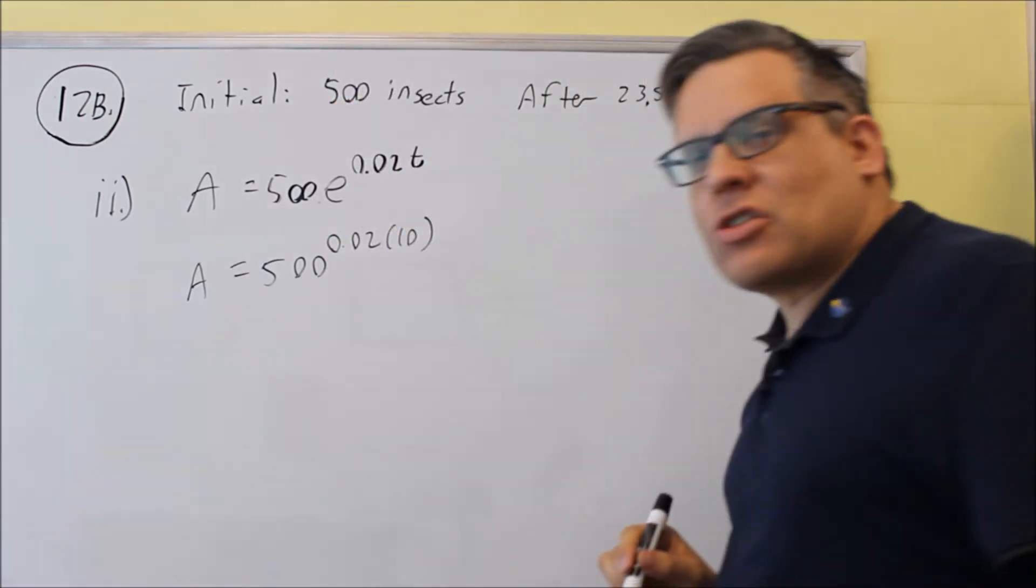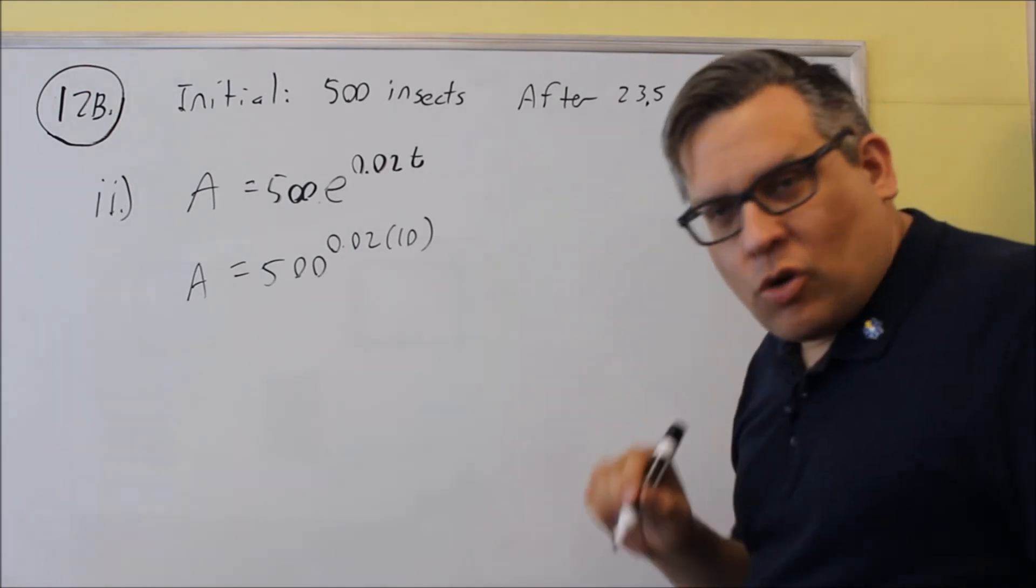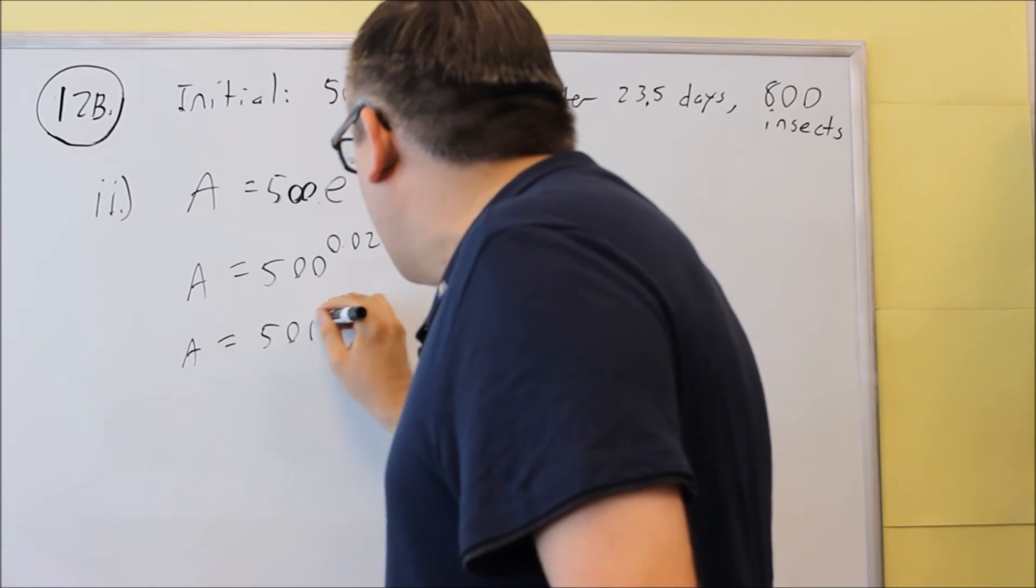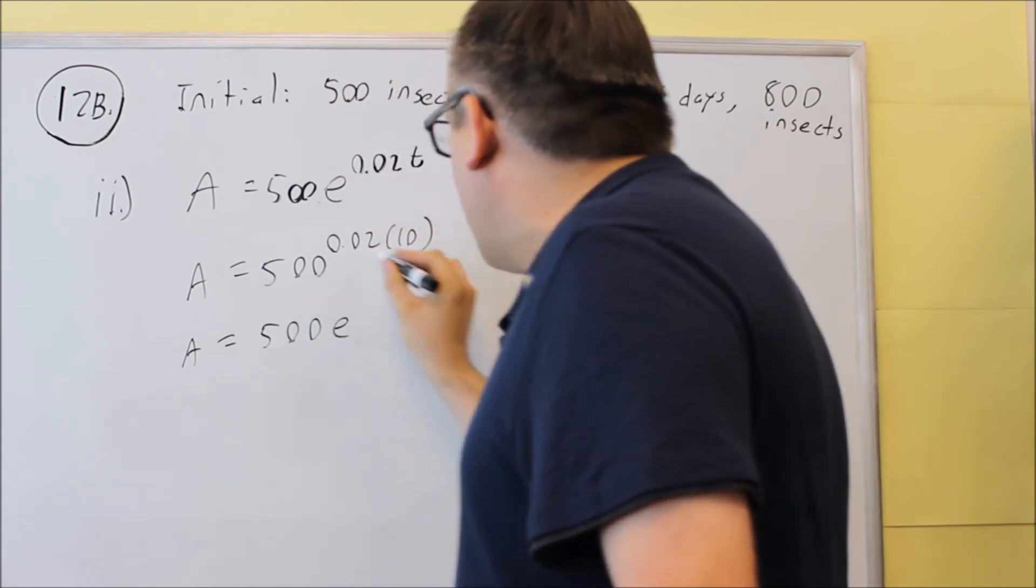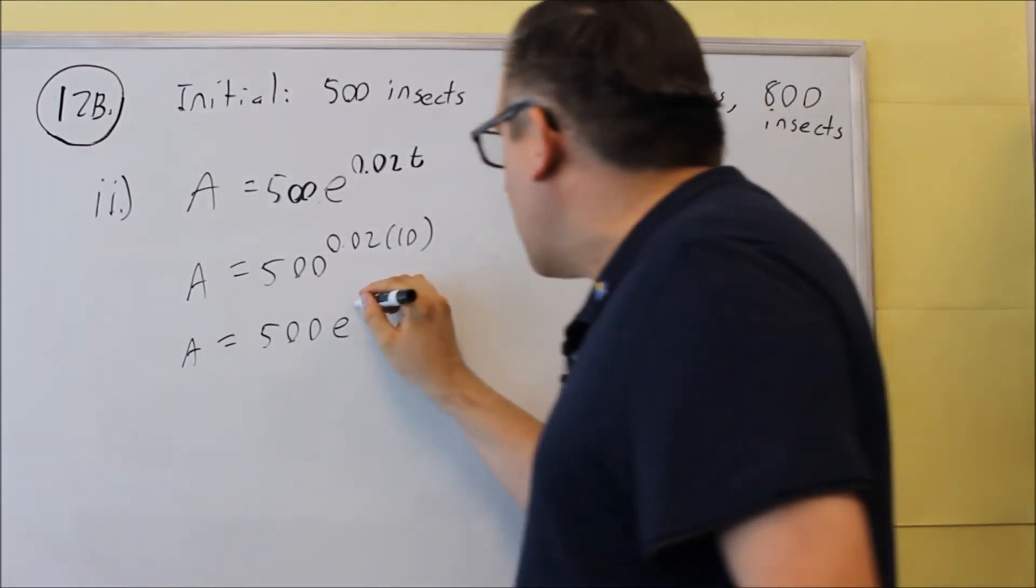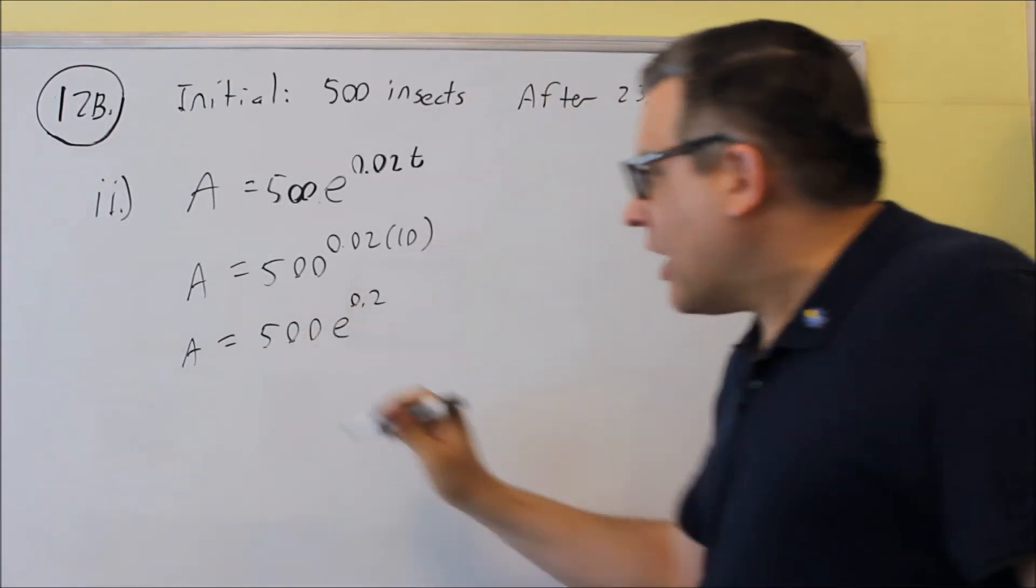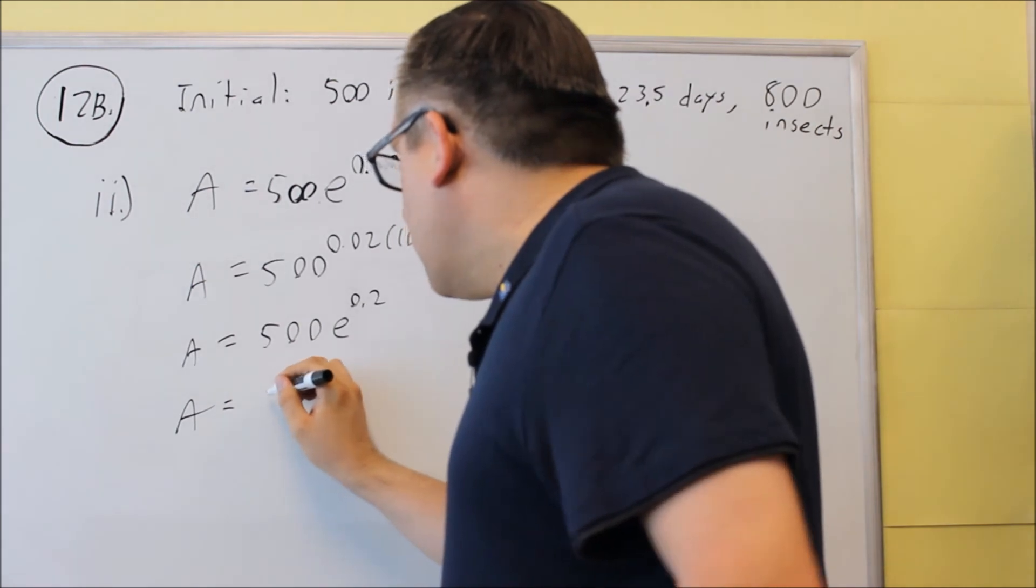Once again, they're asking us to round this to the nearest whole number. Let's start with this. We're going to multiply that together. So 500, that's going to move the decimal place over one place. So it's going to be 0.2, and the whole thing, we'll just put that into our calculator.